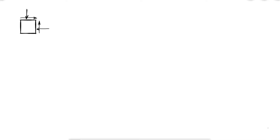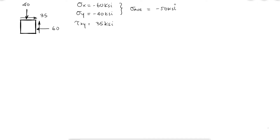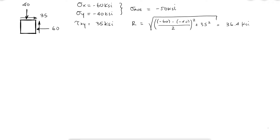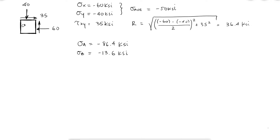When I calculate all the values, I will end up with a stress element that looks like the examples that we're going to look at today. For our first example, we will have two negative normal stresses of minus 40 and minus 60 ksi and a positive shearing stress of 35 ksi. For all of these problems, I will assume a cast iron with an ultimate tensile strength of 30 ksi and an ultimate compressive strength of 110 ksi.